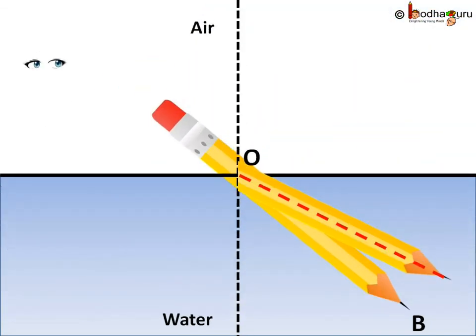Same way the light from all the points of the part of the pencil inside the water changes its course at point O and appears to be coming from a different point. That is the reason the pencil looks bent after it entered the water.